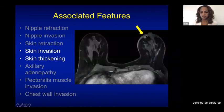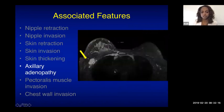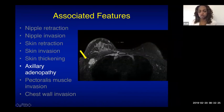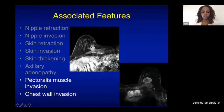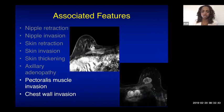Skin thickening can be due to skin invasion or benign causes such as prior radiation therapy or mastitis. Axillary adenopathy should be mentioned — for example, inflammatory breast cancer metastasized to right axillary lymph nodes. Pectoralis muscle or chest wall invasion changes management options and must be reported.